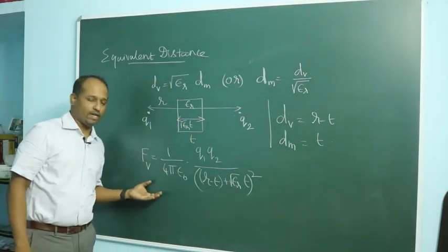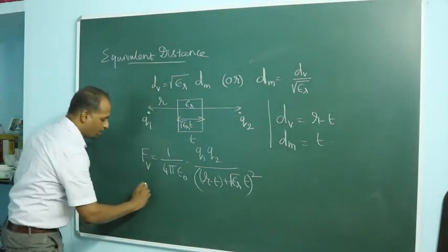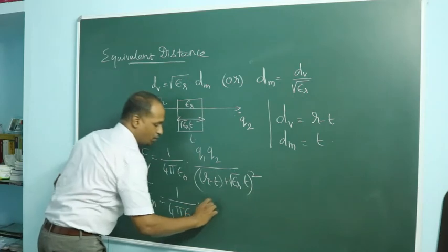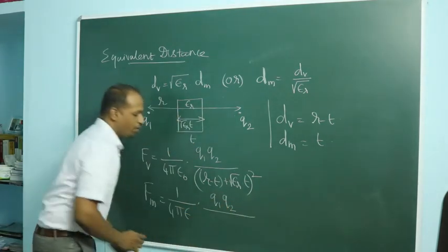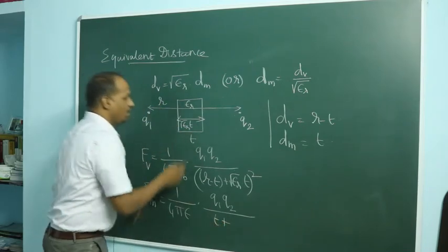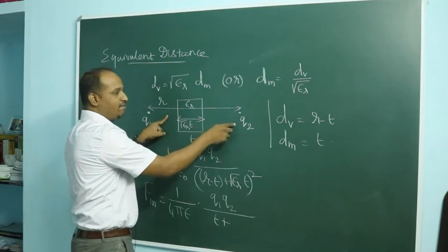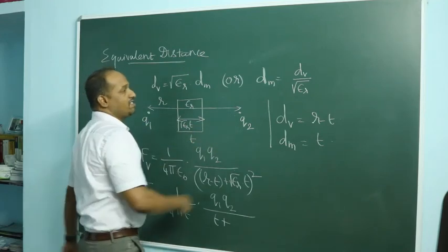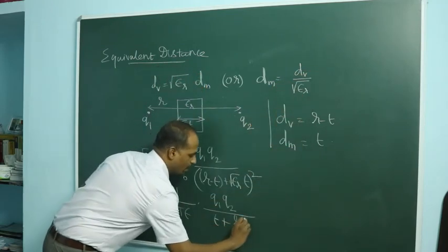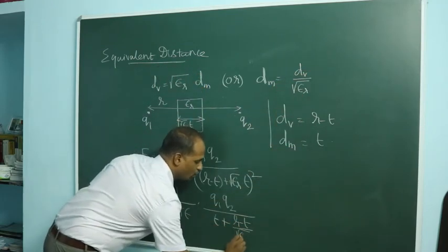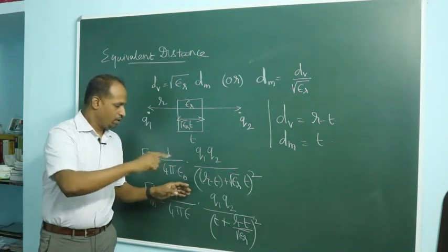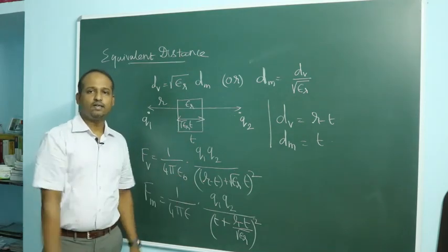Alternatively, if you want to write it wholly in terms of medium: the force is 1 over 4 pi epsilon times q1 q2 divided by the total equivalent medium distance squared. The medium distance is t, and the vacuum distance r minus t has an equivalent medium distance of (r minus t) divided by root(epsilon_r). You can verify that both expressions give the same result.